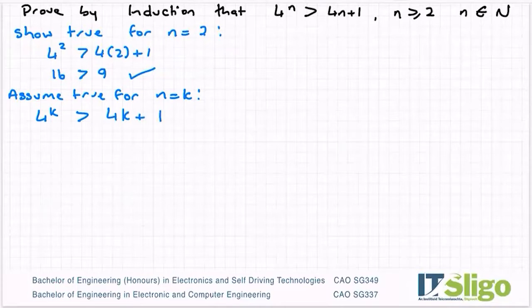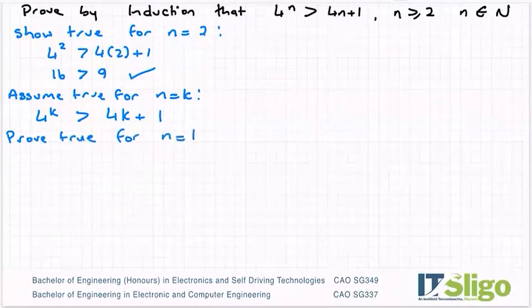So let's go ahead and prove true for n equals k plus 1. So I'll have 4 to the power of k plus 1 is that greater than 4 times the quantity k plus 1 plus 1.